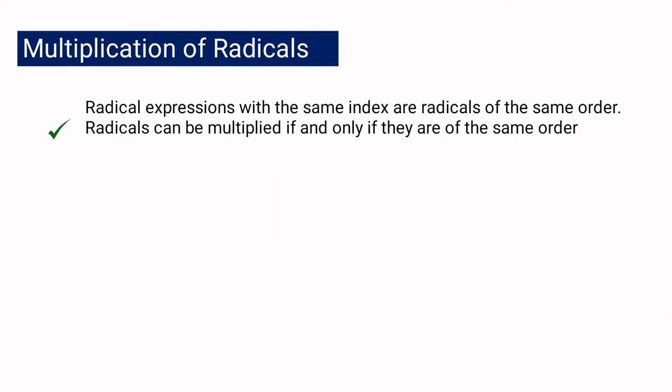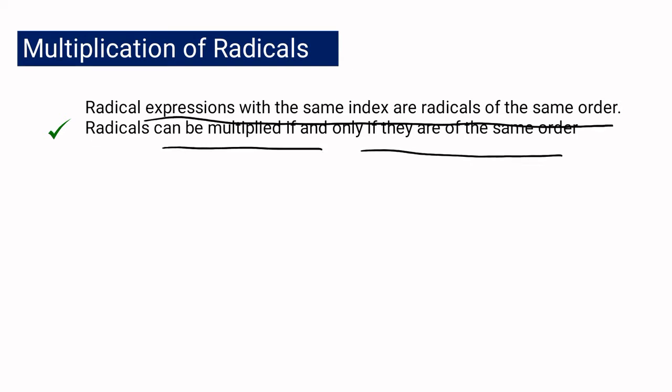Remember that in addition and subtraction of radicals, radicals should be like radicals. But in multiplication, you have to take note that radicals can be multiplied if and only if they are of the same order. Radical expressions with the same index are radicals of the same order — when the indices are the same, regardless of whether the radicands match, the expressions are of the same order and can be multiplied.